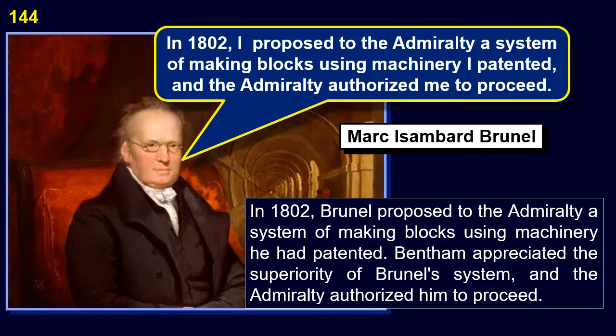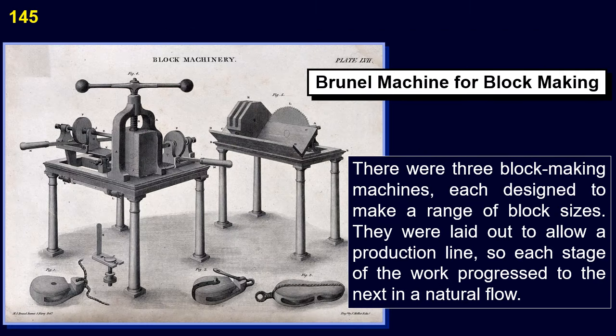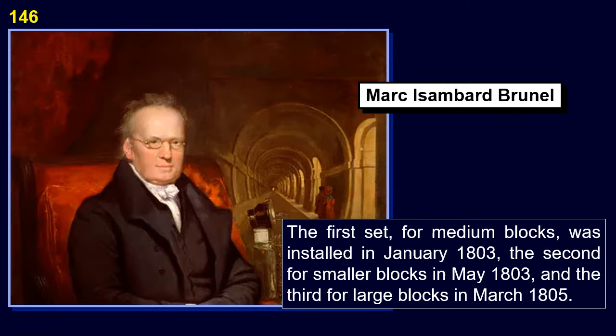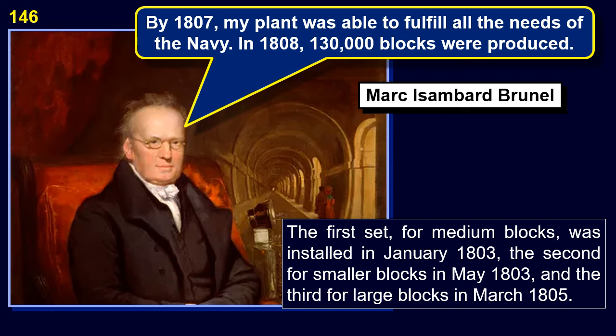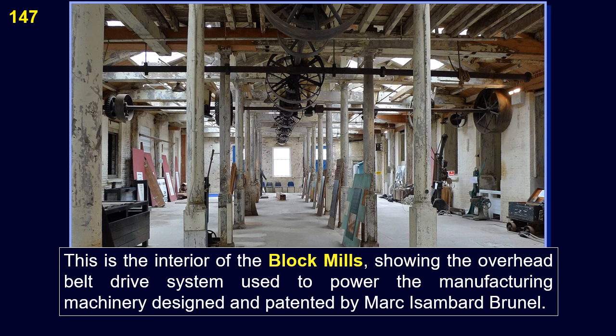In 1802, Brunel proposed to the Admiralty a system of making blocks using machinery he had patented. Bentham appreciated the superiority of Brunel's system, and the Admiralty authorized him to proceed. There were three block-making machines, each designed to make a range of block sizes, laid out to allow production line flow. The first set for medium blocks was installed in January 1803, the second for small blocks in May 1803, and the third for large blocks in March 1805. This is the interior of the block mills, showing the overhead belt drive system used to power the manufacturing machinery designed and patented by Marc Isambard Brunel.